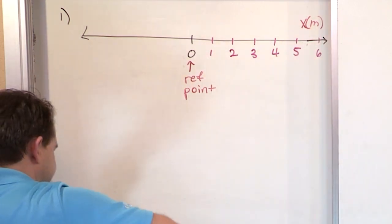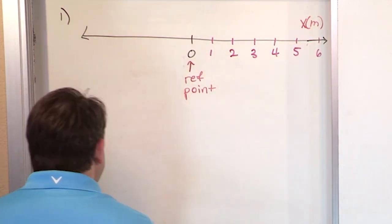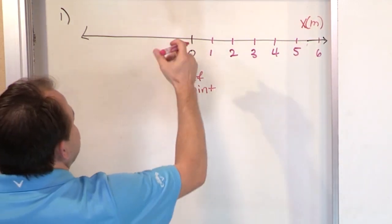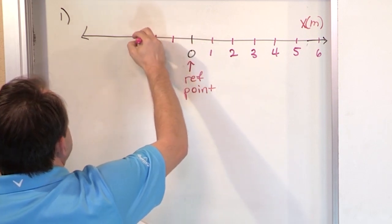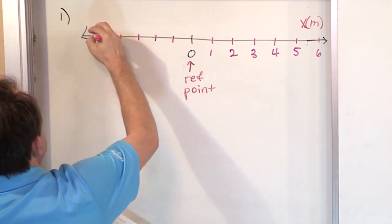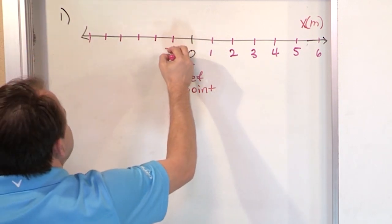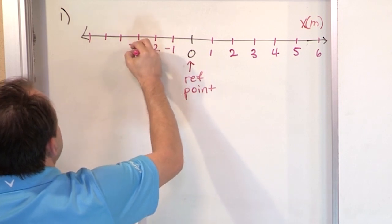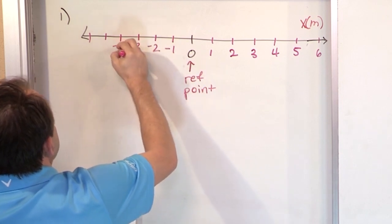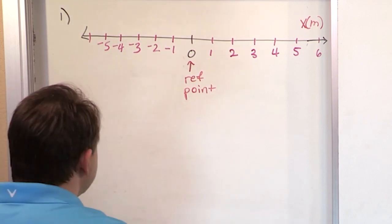And then they go to negative infinity in the other direction. So we'll mark down some tick marks and label negative one, negative two, negative three, negative four, negative five — that's enough for right now.